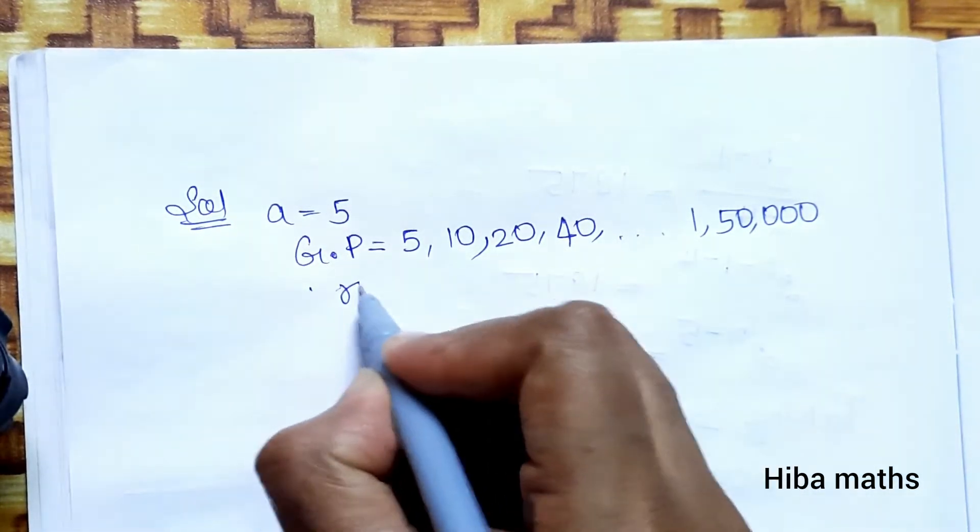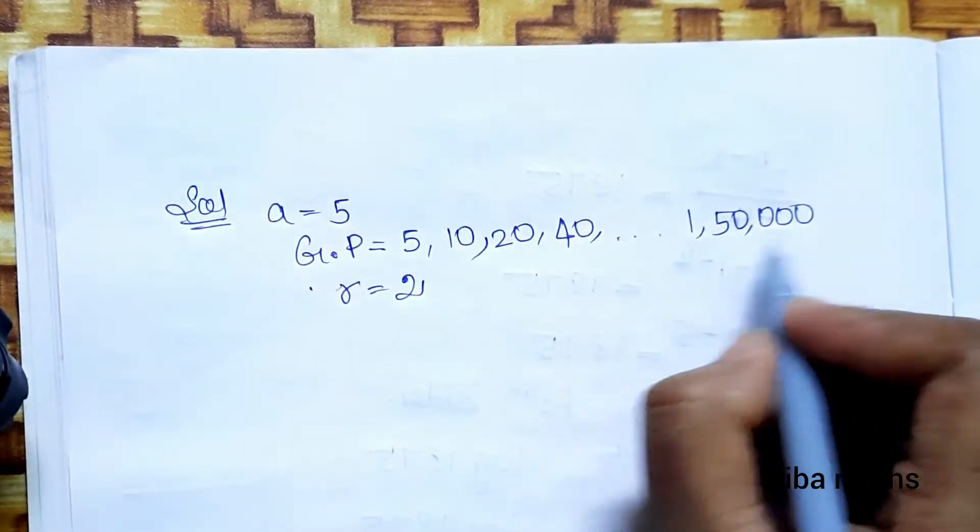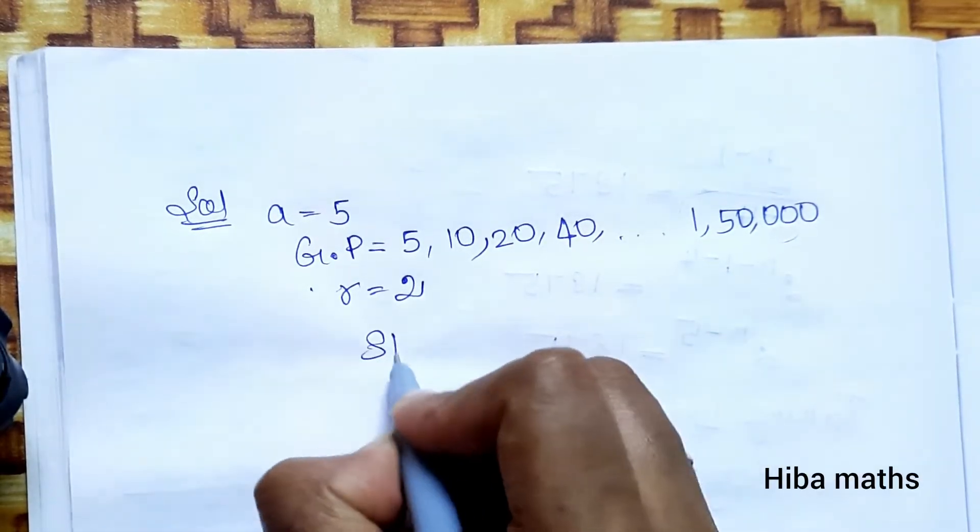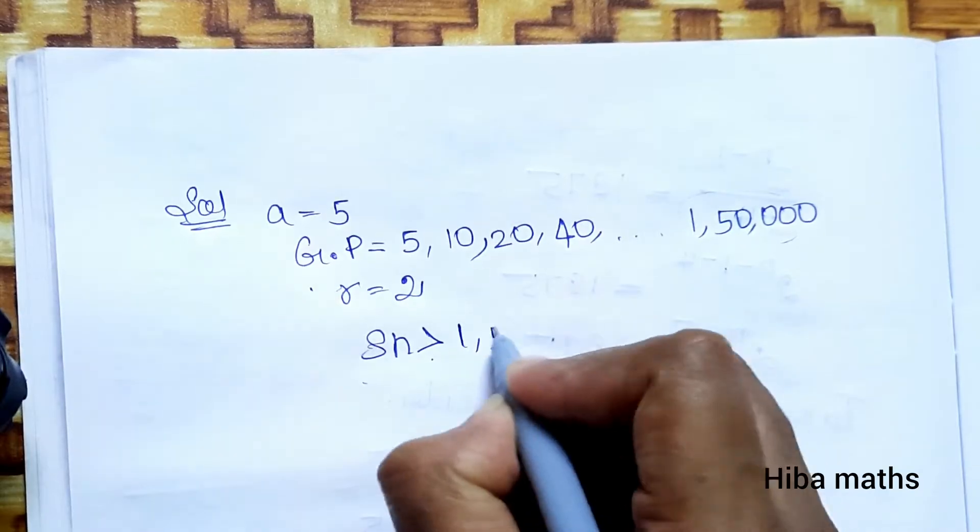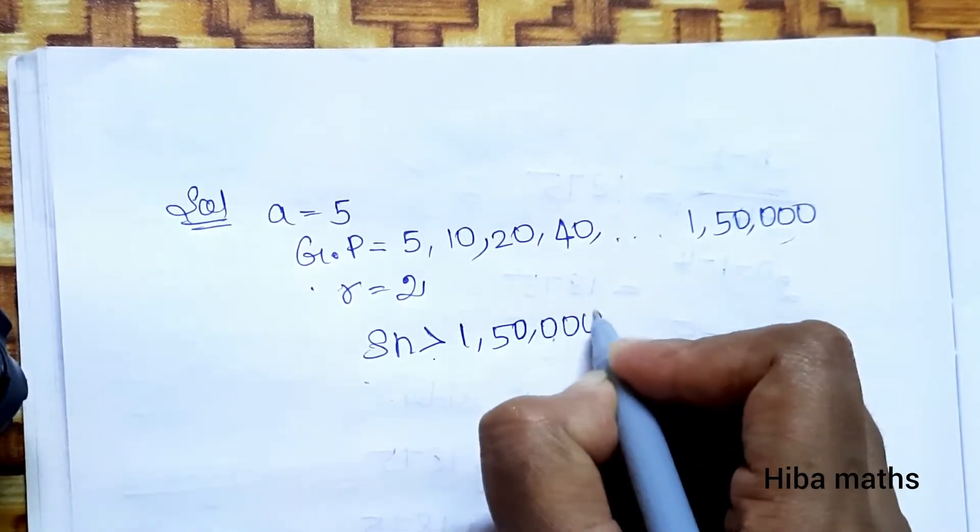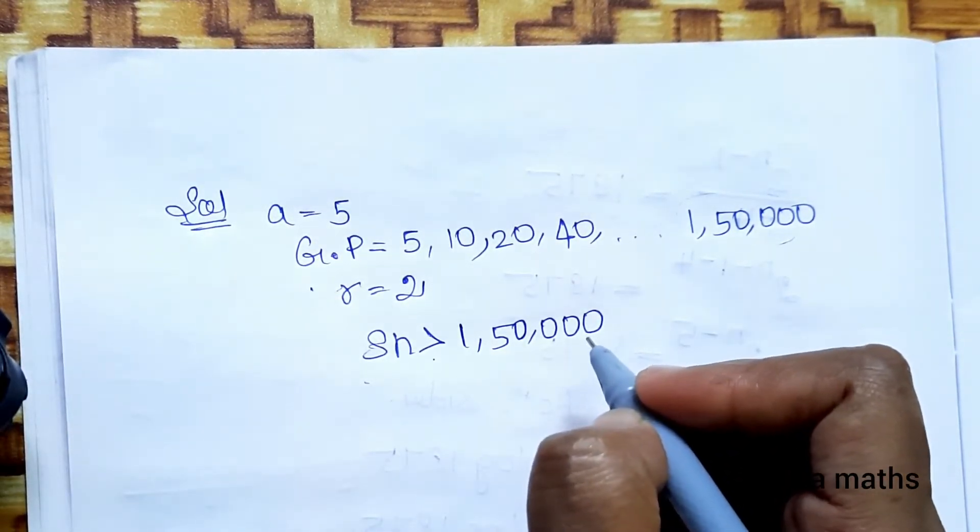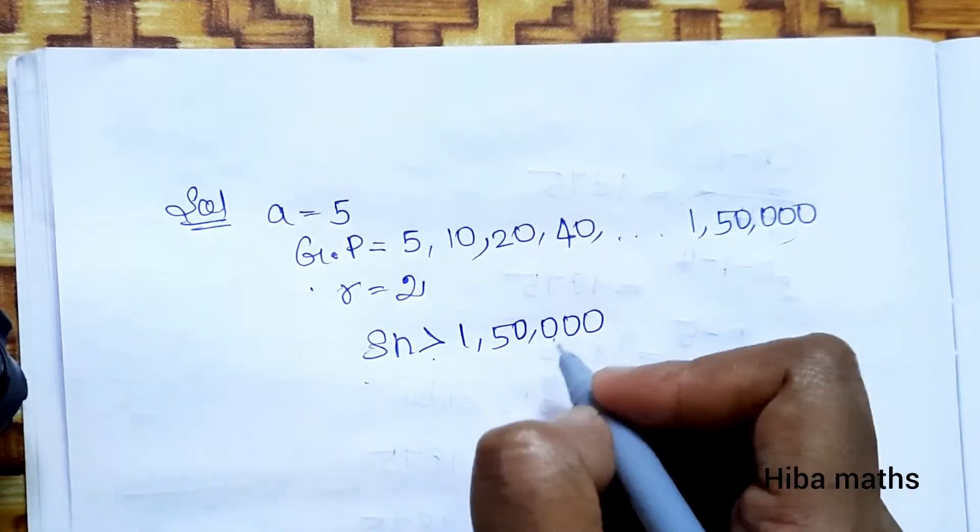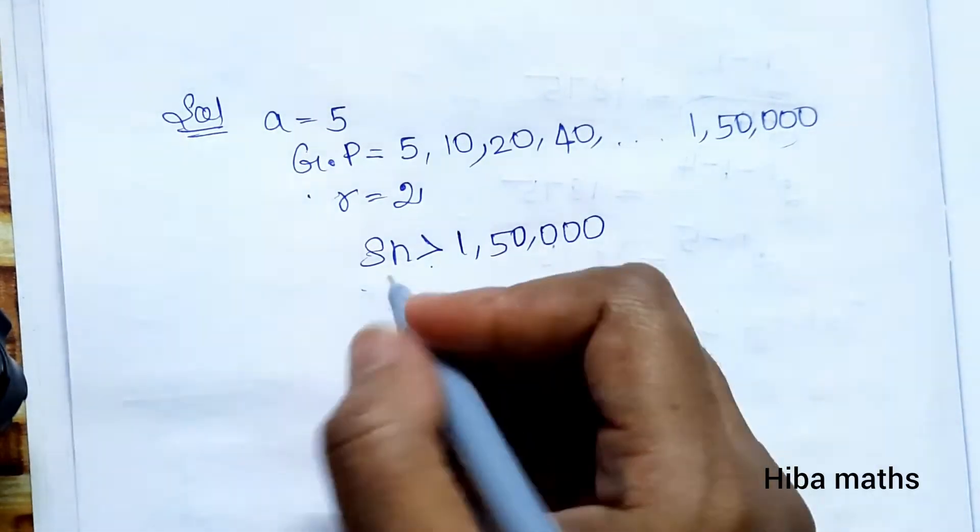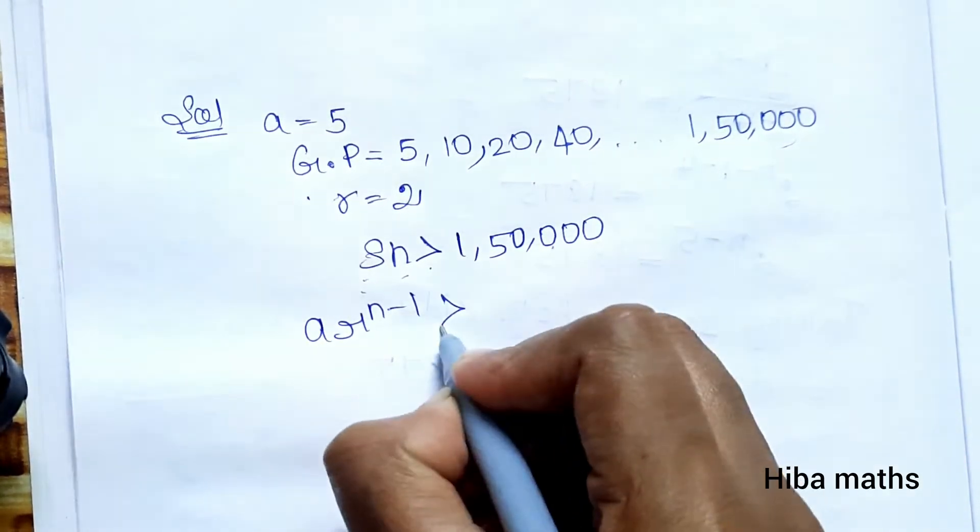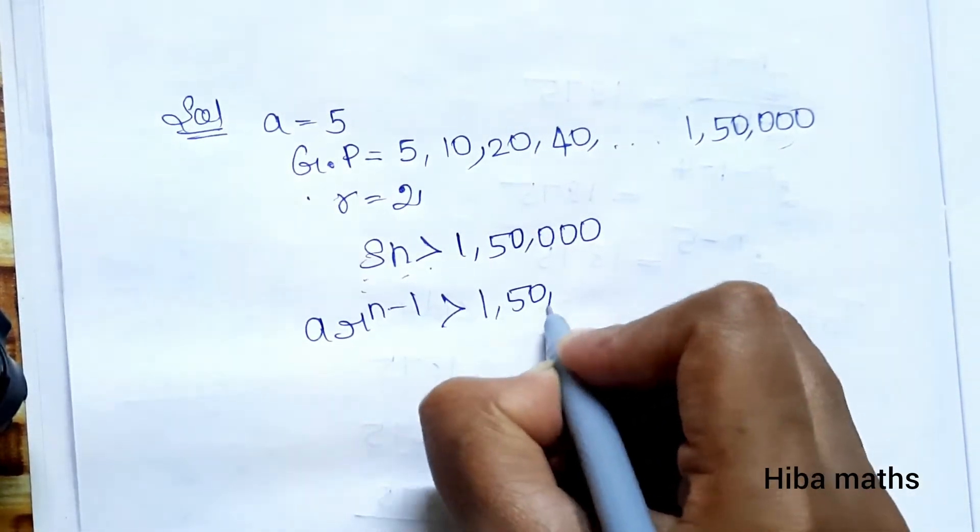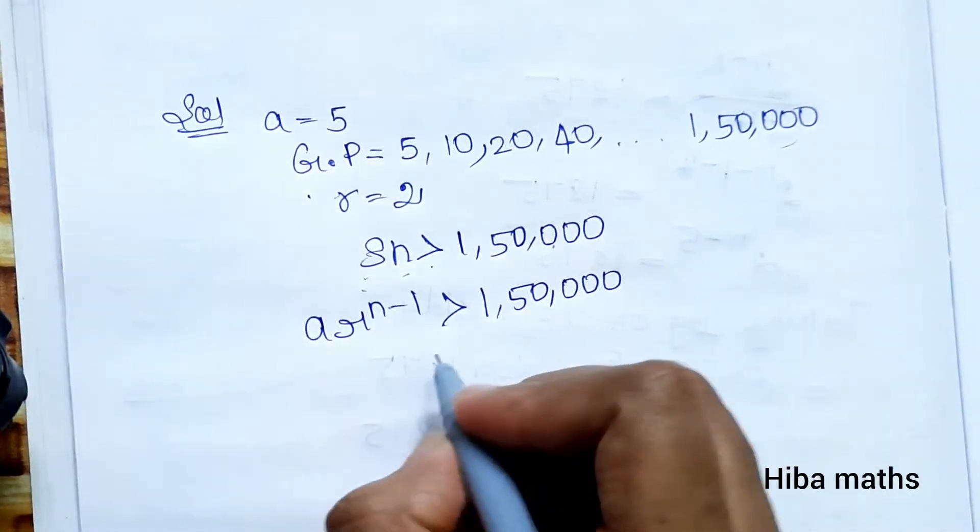S(n) should be greater than 150,000 - just grow over means S(n) should be greater than or equal to 150,000.